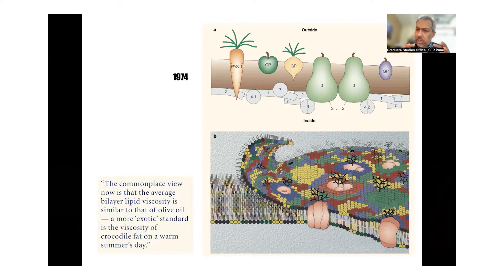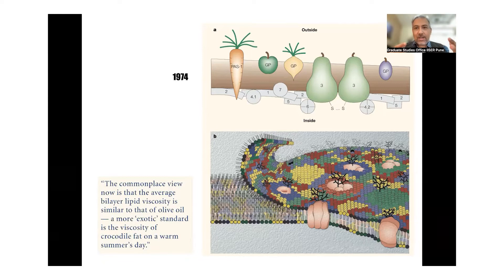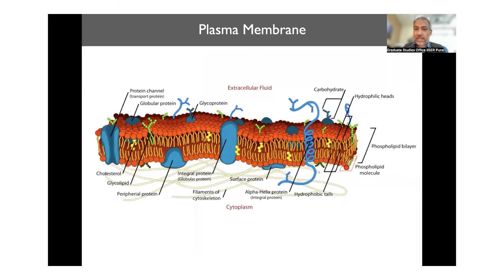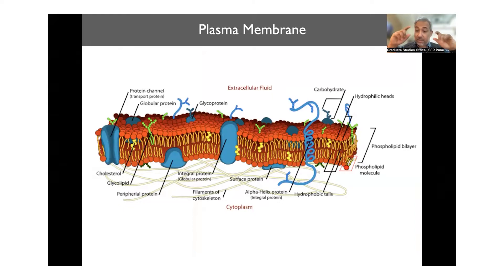There are many models proposed for how this membrane should look. There is something called the fluid mosaic model — please look this up — which is one of the best-accepted models for how the lipid bilayer could look and function. Looking at a cross-section, you have an outer leaflet and an inner leaflet coming together. The outer leaflet has a mixture of lipids — not one kind, but different kinds. The inner leaflet also has a mixture, and we now think the outer and inner leaflets could have slightly different compositions, which matters to cell functionality.